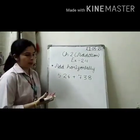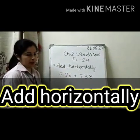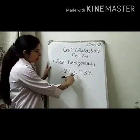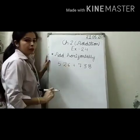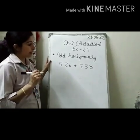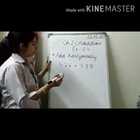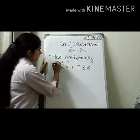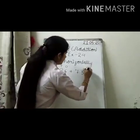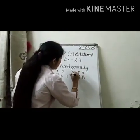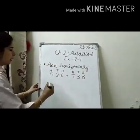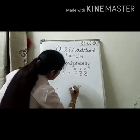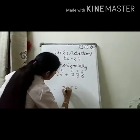Our next topic is 'Add Horizontally.' Our question is 526 plus 738. We need to add horizontally. The very first step is to set up place values — ones, tens, hundreds — for both numbers on top, and for the answer row: ones, tens, hundreds, and thousands.